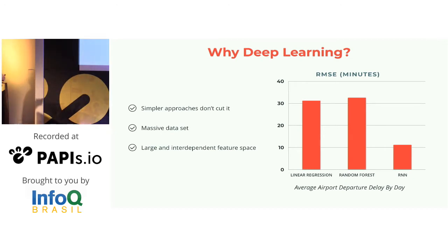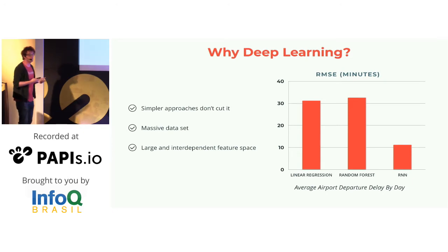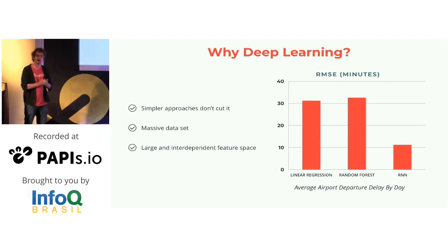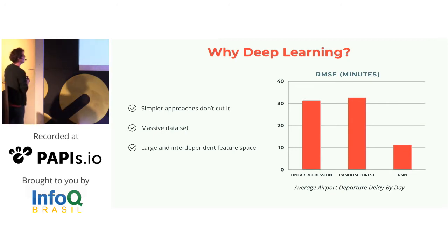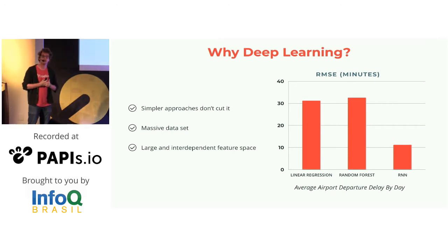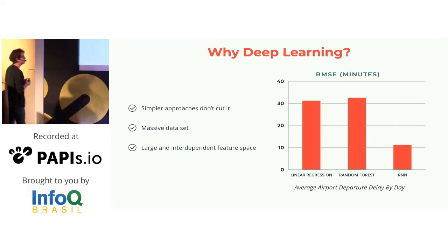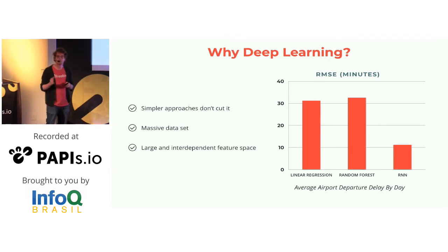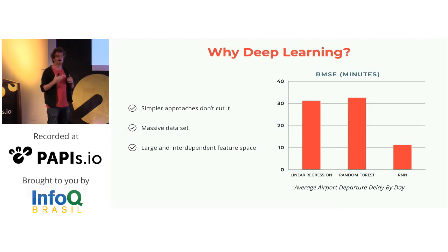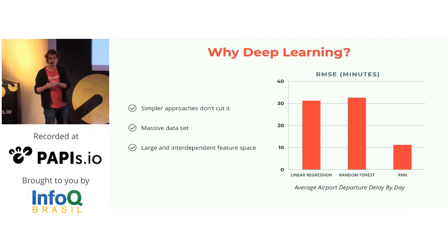Why did deep learning differentially outperform? First, we have a massive amount of data, and many methods weren't scaling well to the feature space we needed. Second, the feature space is large and contains many non-linear interactions between things like destination weather, origin weather, inbound flight delays, and the way a carrier chooses to economically operate its flights.